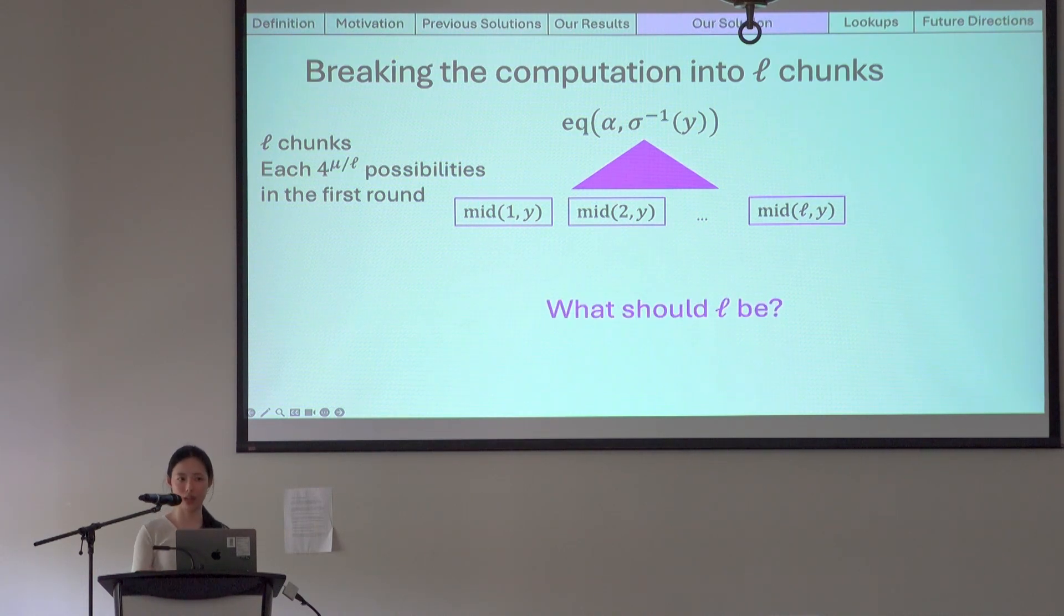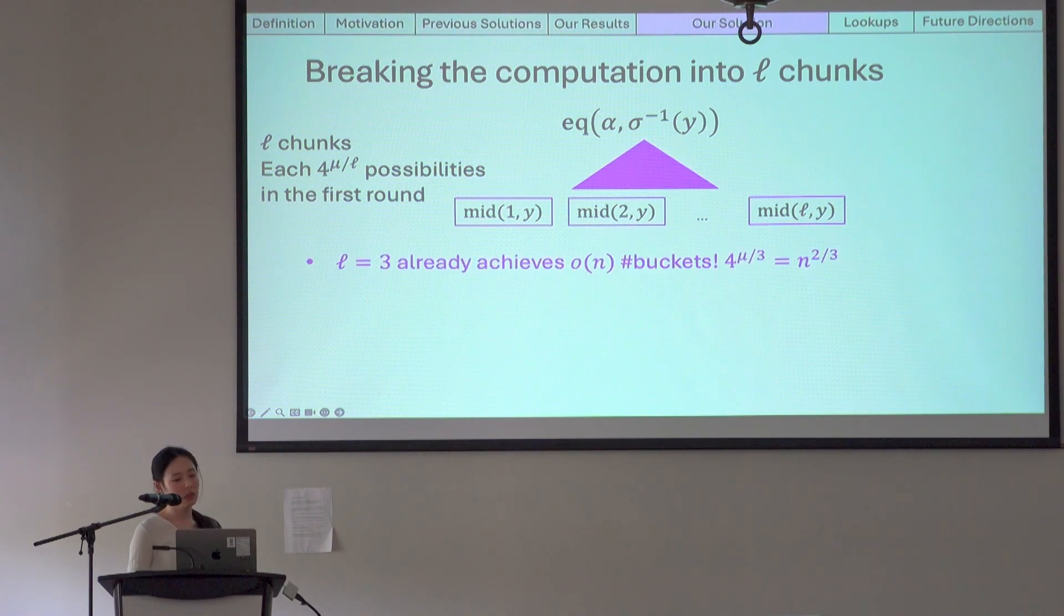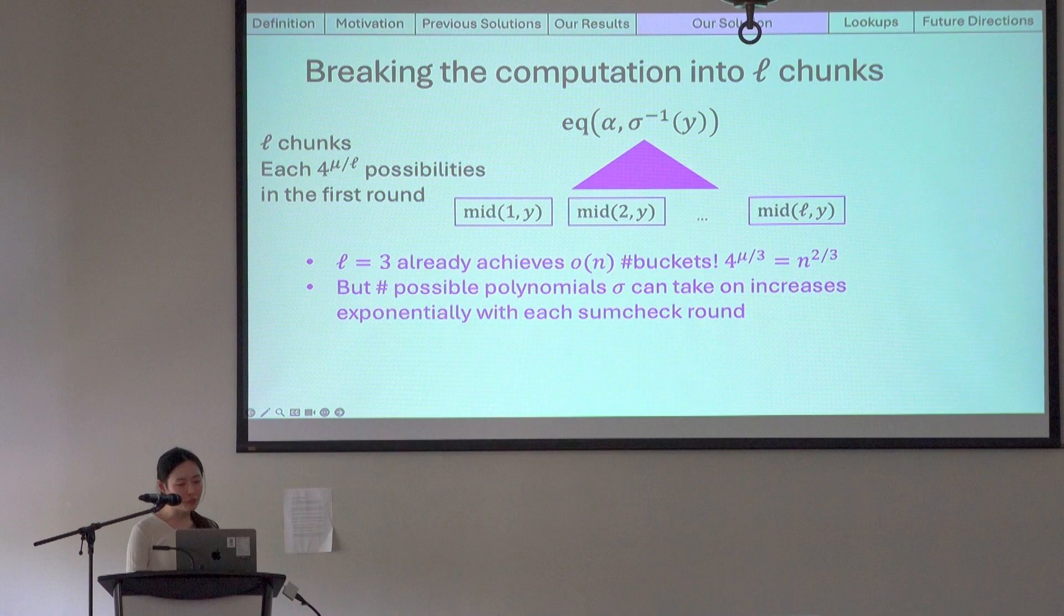So how many chunks do we actually need? What should the value of L be? Well observe that as small as L equals to 3 already achieves sublinear number of buckets in the first round of sum check. Because 4 to the mu over 3 is equal to n to the two-thirds. But unfortunately the solution is not that simple, because the number of possible polynomials sigma can take on increases exponentially with each sum check round.